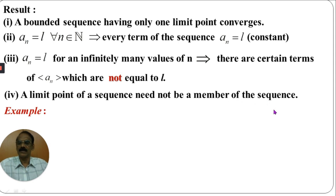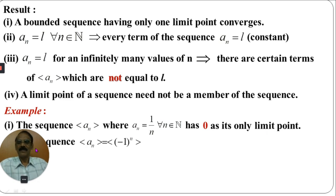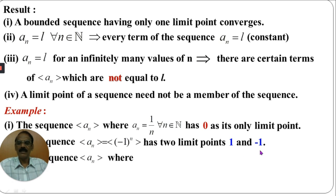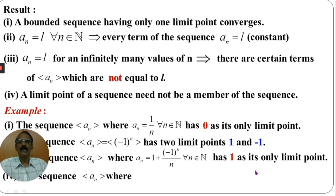Some examples. The sequence AN where the nth term AN equals 1/N for all N belonging to N has 0 as its only limit point. The sequence AN whose nth term is (-1)^N has two limit points, namely 1 and -1. The sequence AN equals 1 plus (-1)^N divided by N for all N belonging to N has 1 as its only limit point, because taking the limit as N tends to infinity gives 1 plus 1/infinity, and 1/infinity is 0, so the limit is 1.